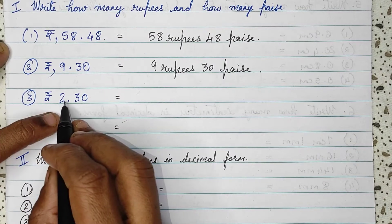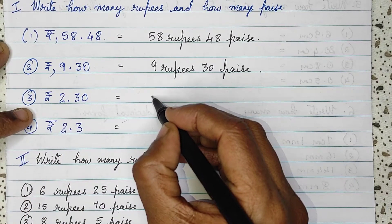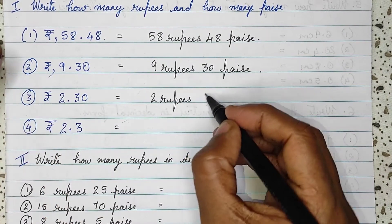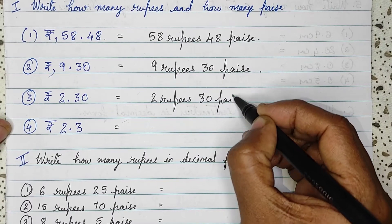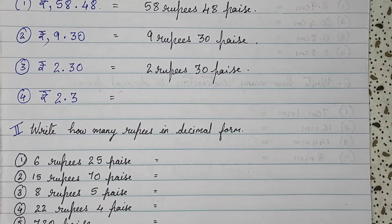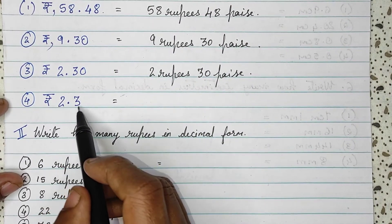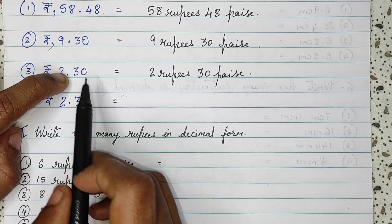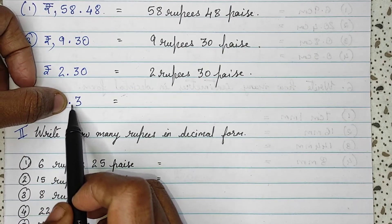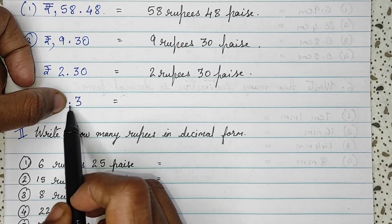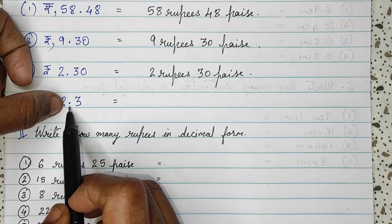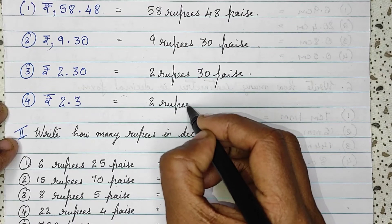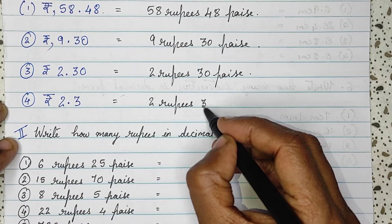Next question: R 2.30 — that means 2 rupees and 30 paise. Then R 2.3 — again, see, this and the previous are almost the same. Here they have given 0 and here they have not given 0. But after the decimal it is 3, immediately after the point. That means it is paise only. So, 2 rupees and 30 paise.